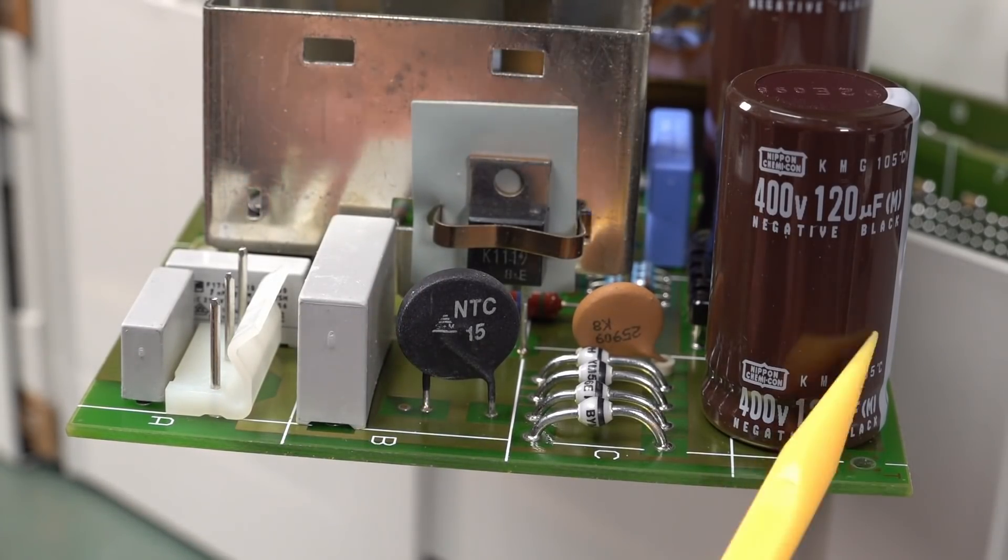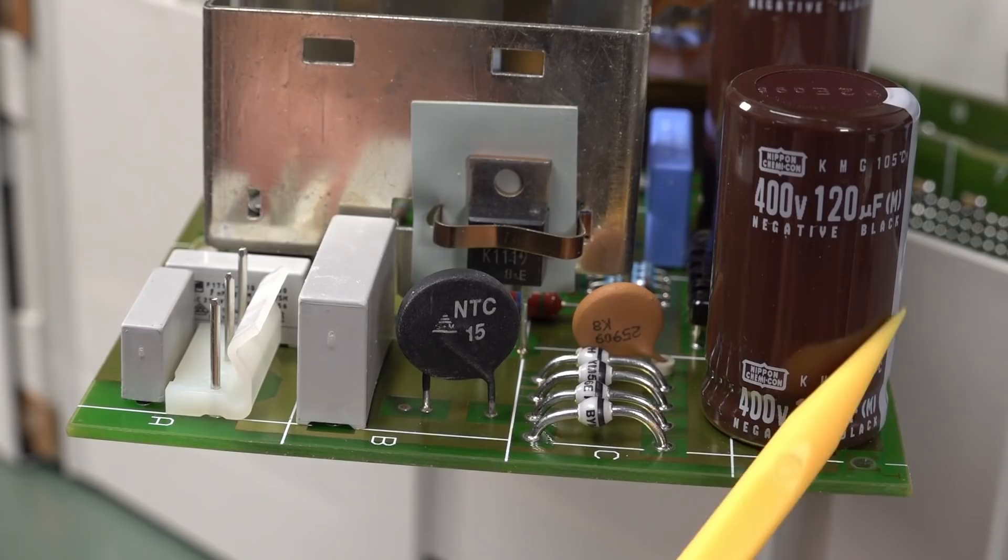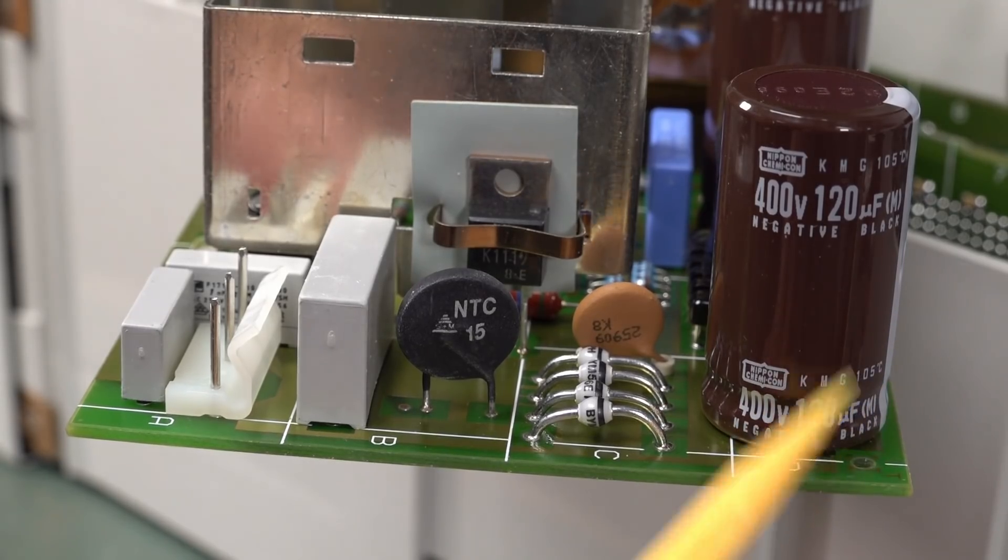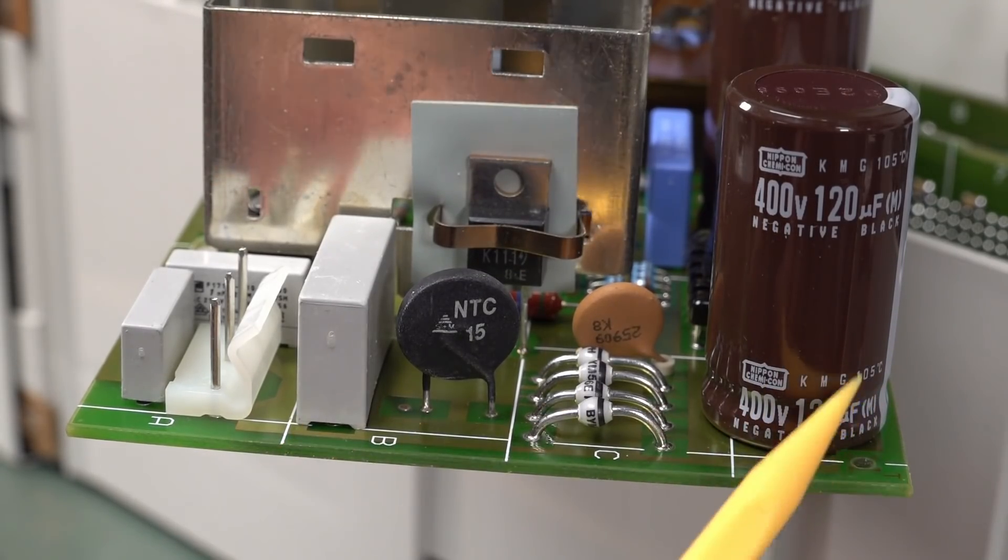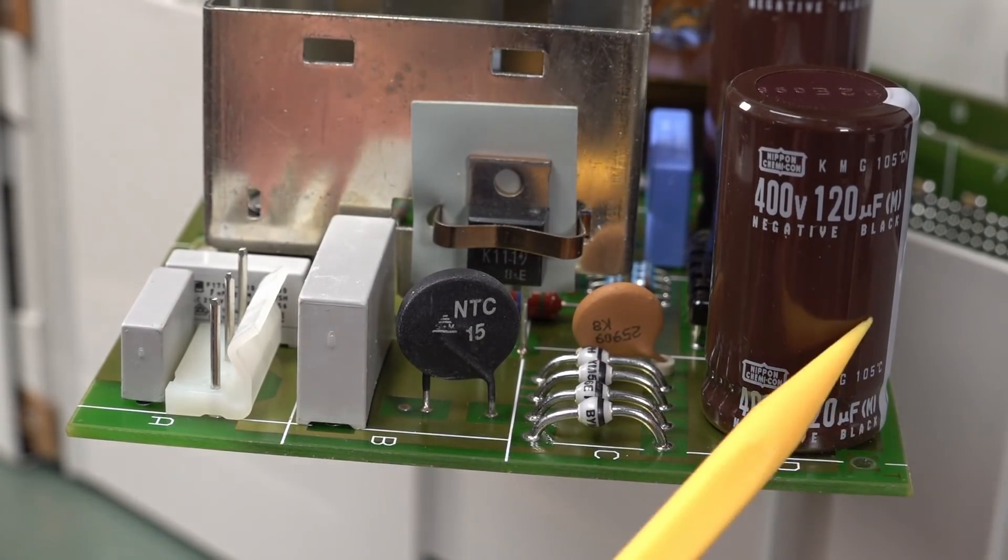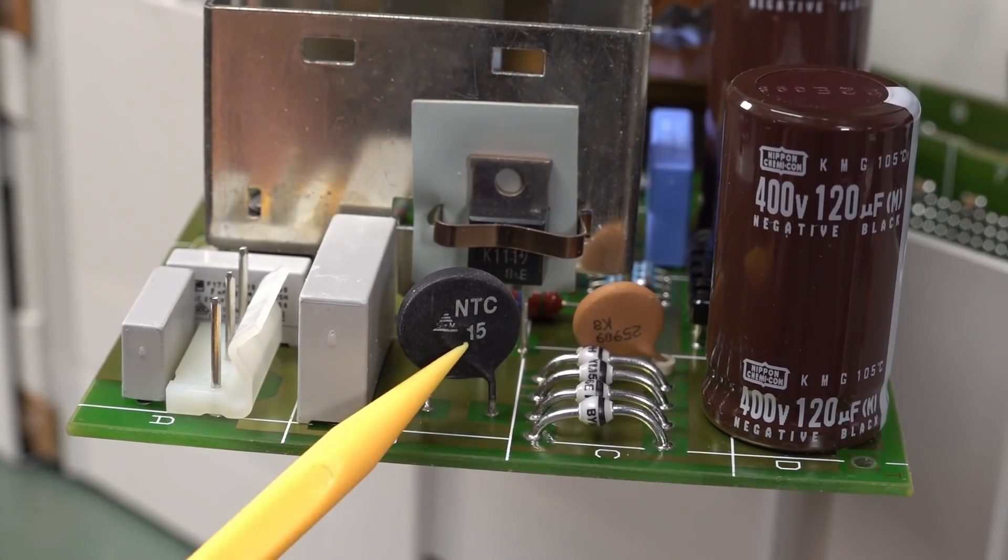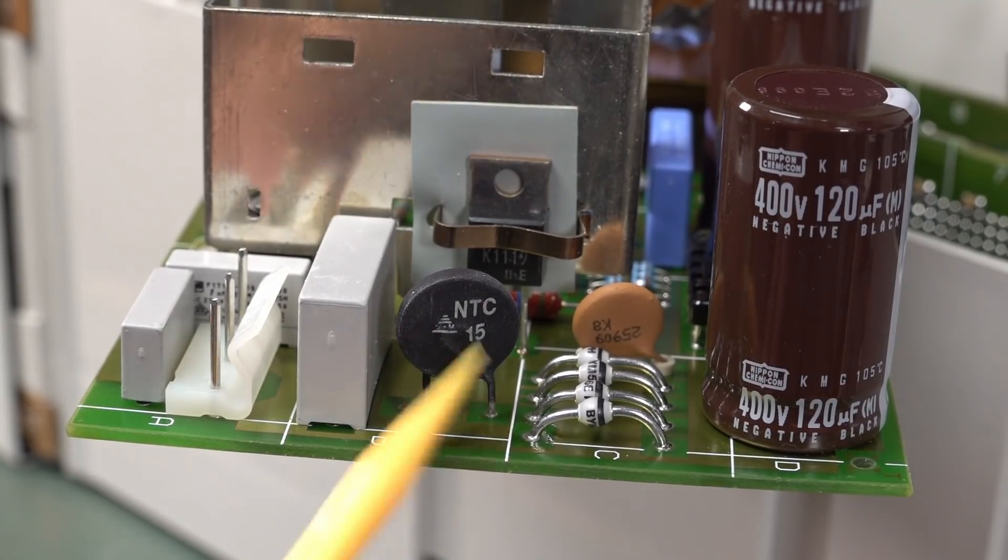But why they've got an NTC in here, in series with the bridge rectifier, what that's doing is it operates negative. So if the temperature increases, the resistance goes down. Well, why would you do that? That sounds dumb, right? Well, no, it's not. What that's used for, if you see an NTC in series with something like this, you know that's used for inrush current limiting. When you first turn it on, these capacitors are going to act as basically a short circuit. So you want to limit the inrush current to charge these capacitors up. And the way you do that is with an NTC, not a PTC.